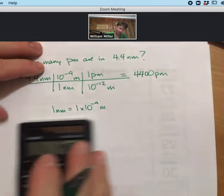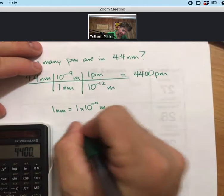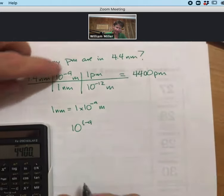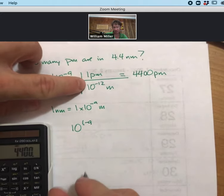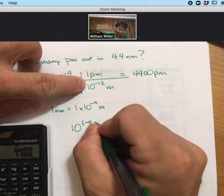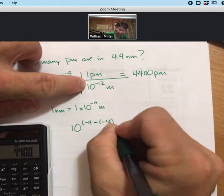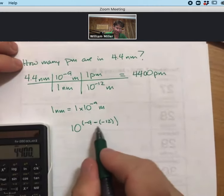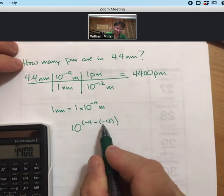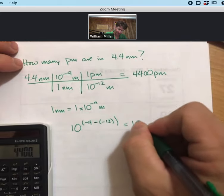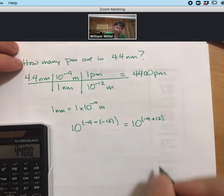Well, it would be 10 to the minus 9, and then anything that's in the denominator, you subtract. And so since it's a minus, a minus, this actually equals 10 to the minus 9 plus 12.